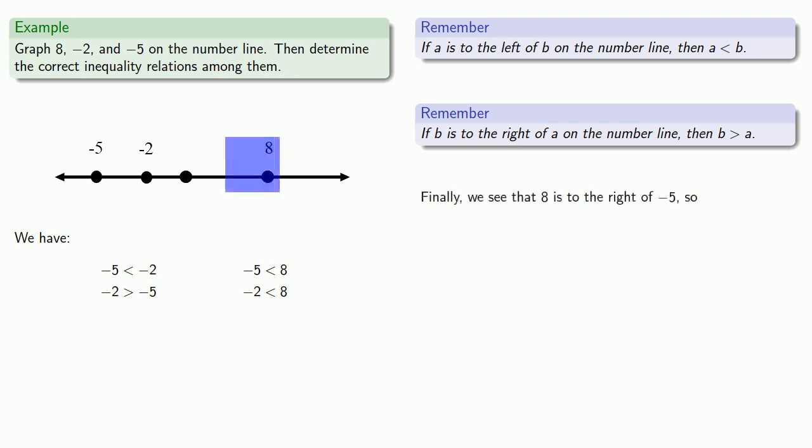Finally, we see that 8 is to the right of negative 5, so we write 8 is greater than minus 5. And 8 is also to the right of negative 2, and so 8 is greater than minus 2.